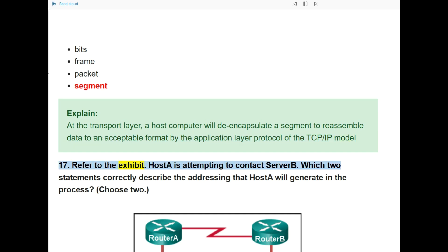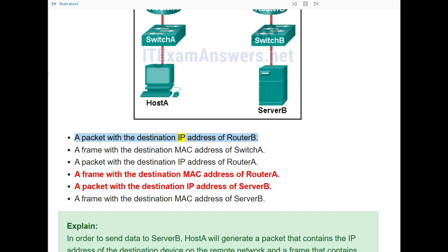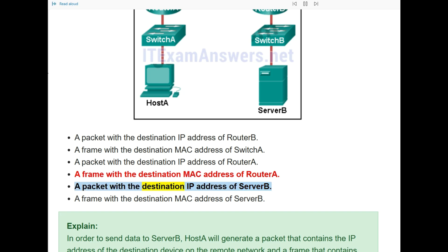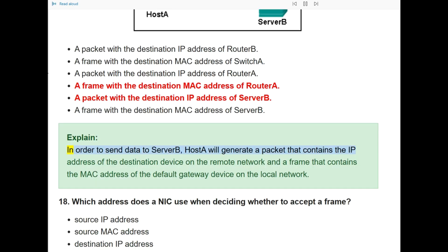Question 17: Refer to the exhibit. Host A is attempting to contact Server B. Which two statements correctly describe the addressing that Host A will generate? The correct answers are: a packet with the destination IP address of Server B, and a frame with the destination MAC address of Router A. Host A will generate a packet containing the IP address of the destination on the remote network, and a frame containing the MAC address of the default gateway on the local network.